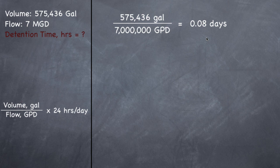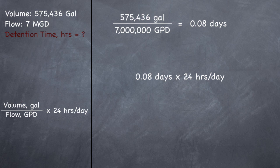So gallons divided by gallons equals 0.08 days. So if they wanted detention time in days, we could stop right here. But they want it in hours. So we need to go ahead and multiply this by 24 hours per day. So 0.08 days times 24 hours per day should give you 1.9 hours.